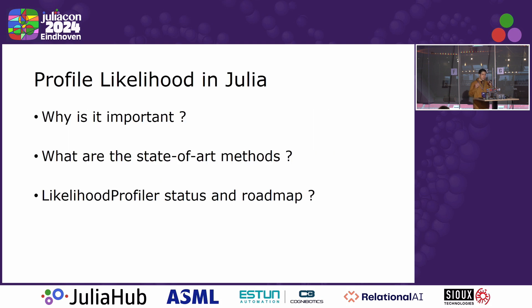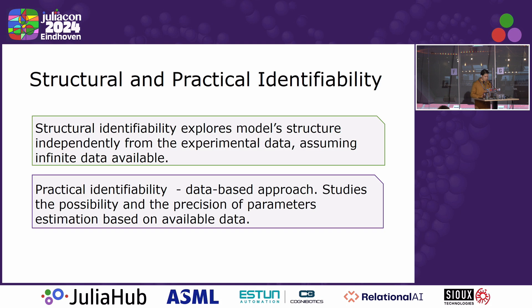I'm going to speak about profile likelihood in three aspects. First of all, what is it and why is it important? Secondly, what are the current state-of-the-art methods? What do we have in Julia? What are we implementing right now?